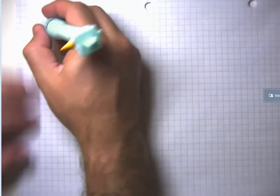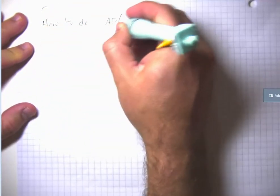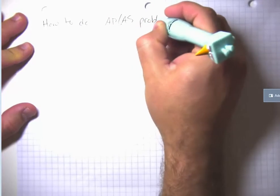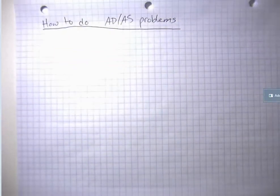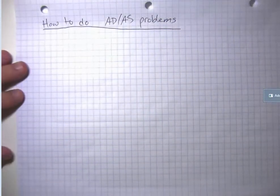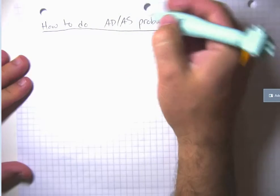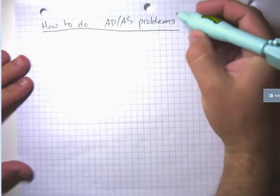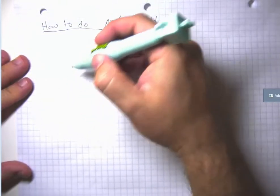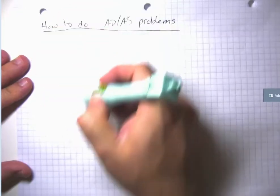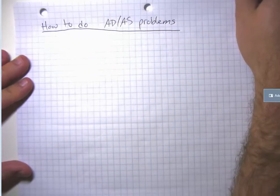In this last video segment, I'm going to talk about how to do aggregate demand and aggregate supply problems. Just like with normal supply and demand problems, I would really encourage you to follow a set of steps to walk through the problem systematically. I've noticed over the years that when students don't follow this disciplined set of steps, they often jump to the punchline and get confused. It's especially a problem in macroeconomics because everything affects everything.